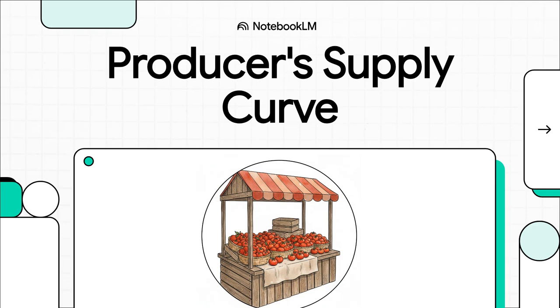Today we are diving deep into one of the absolute cornerstones of economics: the producer's supply curve. We're going to figure out how any business — whether it's a small farm or a huge tech company — decides exactly how much stuff to put on the market. Let's get right into it.